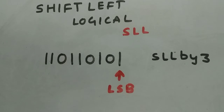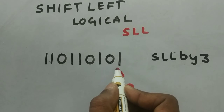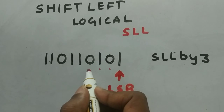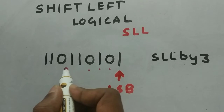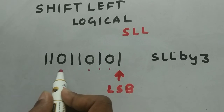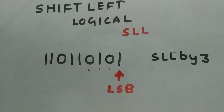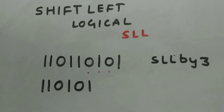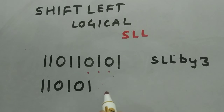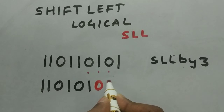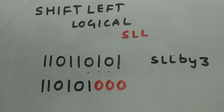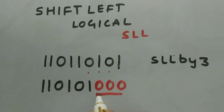Taking from the LSB, we shift by three positions: one, two, and three. The bits move over accordingly, and the MSB bits that go beyond the register are thrown out. The first three vacated positions are filled with zeros. In logical shift, we always fill the remaining bits with zeros.